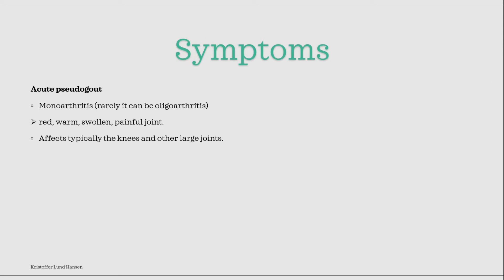For a long while the disease can be asymptomatic; however, at one point there will be a sudden onset of inflammation in one joint, called monoarthritis. Sometimes it can also occur as an oligoarthritis, which affects 2–4 joints. Classically the inflammation occurs in the knee, but it can also occur in other large joints.